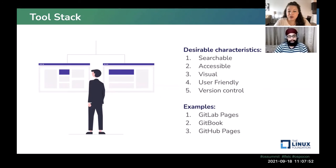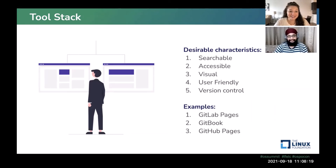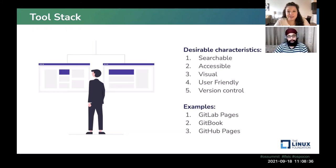As you decide what tool to use, we don't want to give hard recommendations but will offer some desirable characteristics: the tool should be searchable, accessible, visual, user-friendly, and should have version control — because the worst thing would be for someone to delete your pages with no way to revert. Some tools we recommend looking into are GitLab Pages, GitBook, and GitHub Pages, among others.